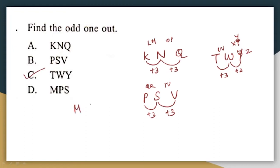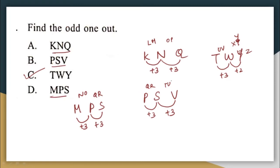Let us check M, P, S to verify. After M, N and O are missed and they have written P — so M plus 3 is P. After P, Q and R are not written and they have written S — P plus 3 is S. This is also following the same pattern. So all three other options follow the same pattern, but option C is the odd one out.